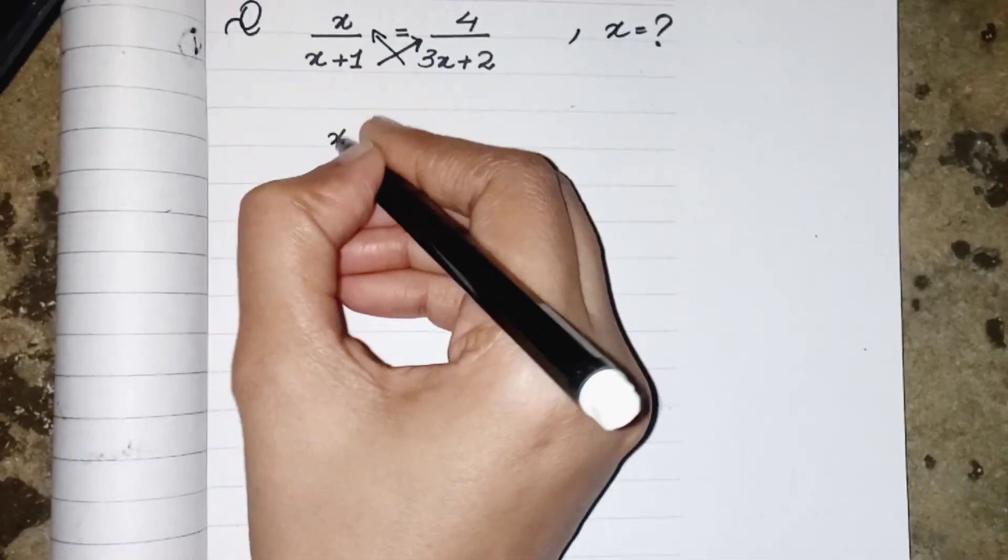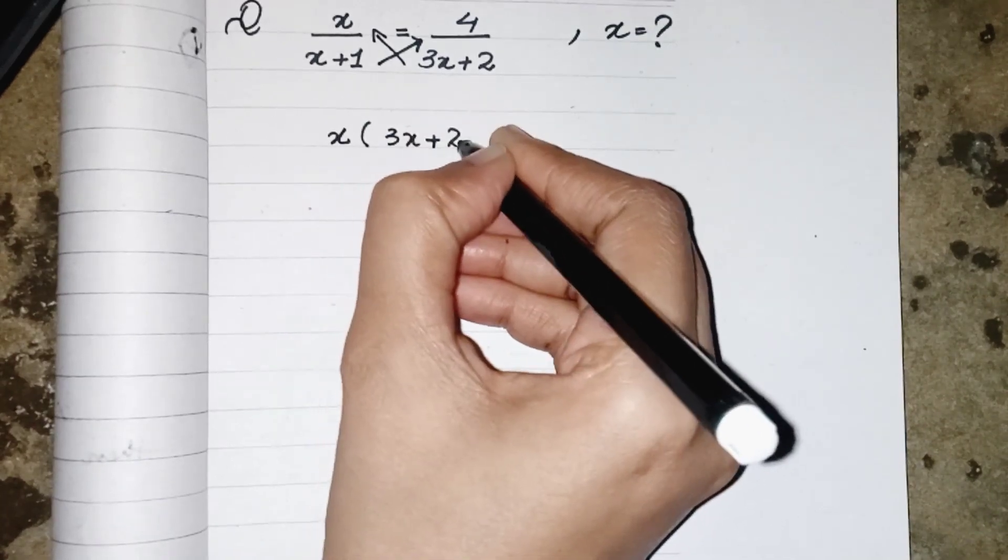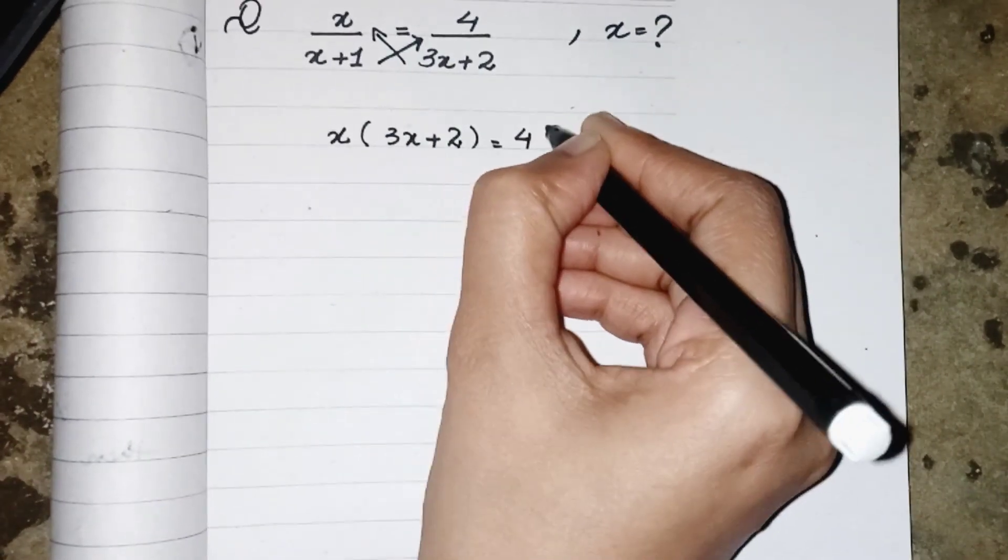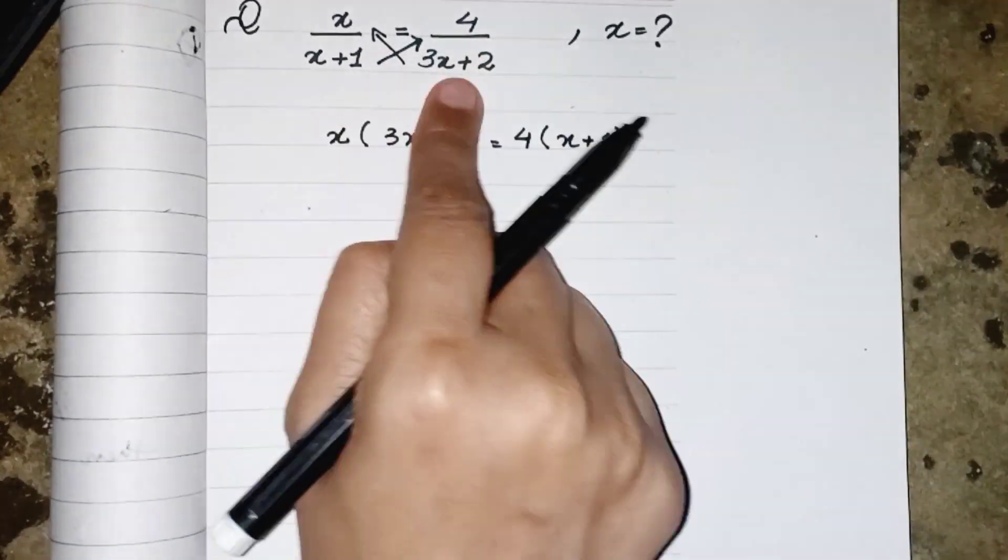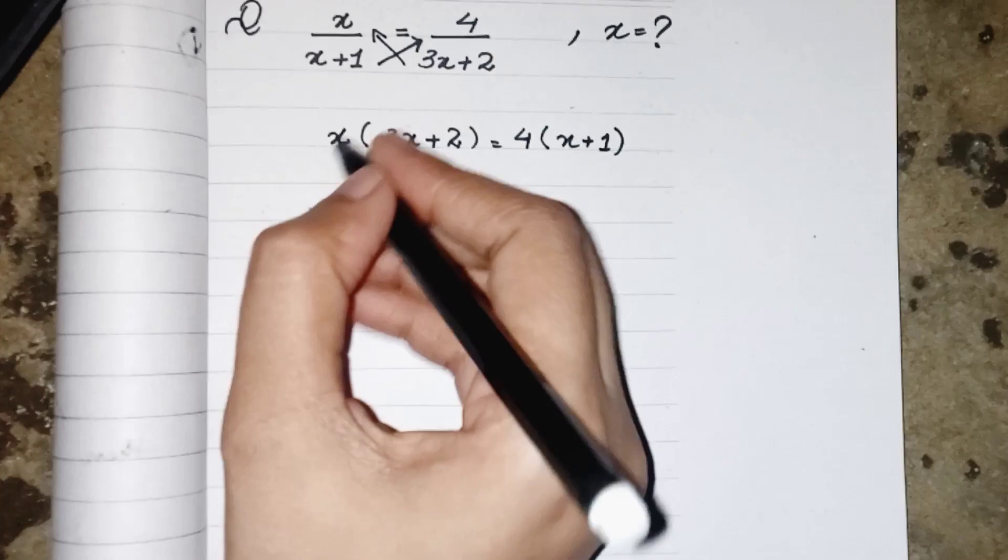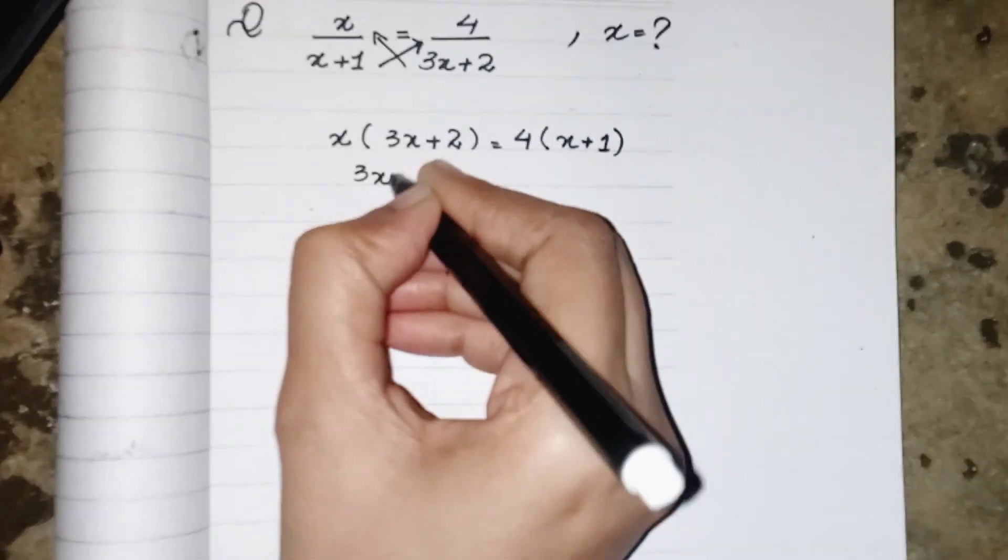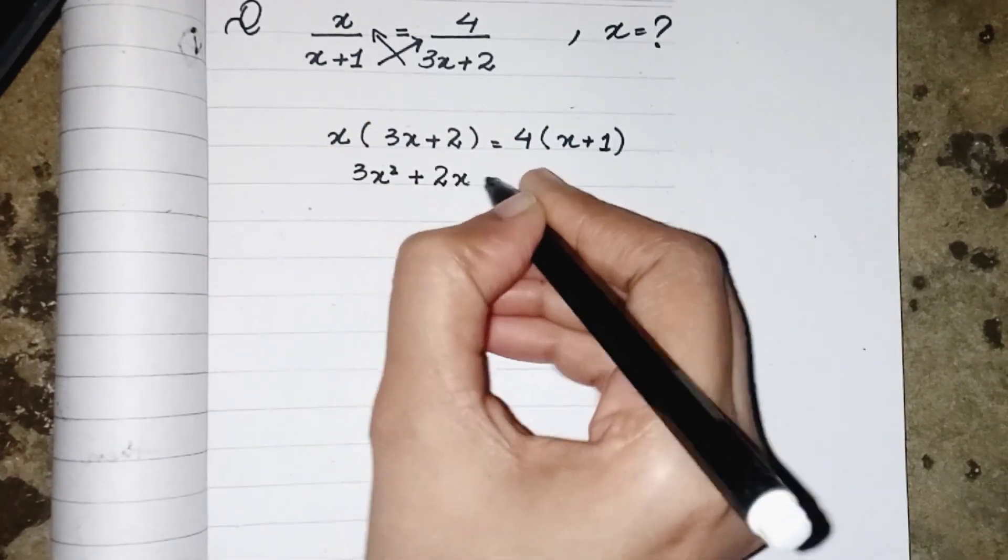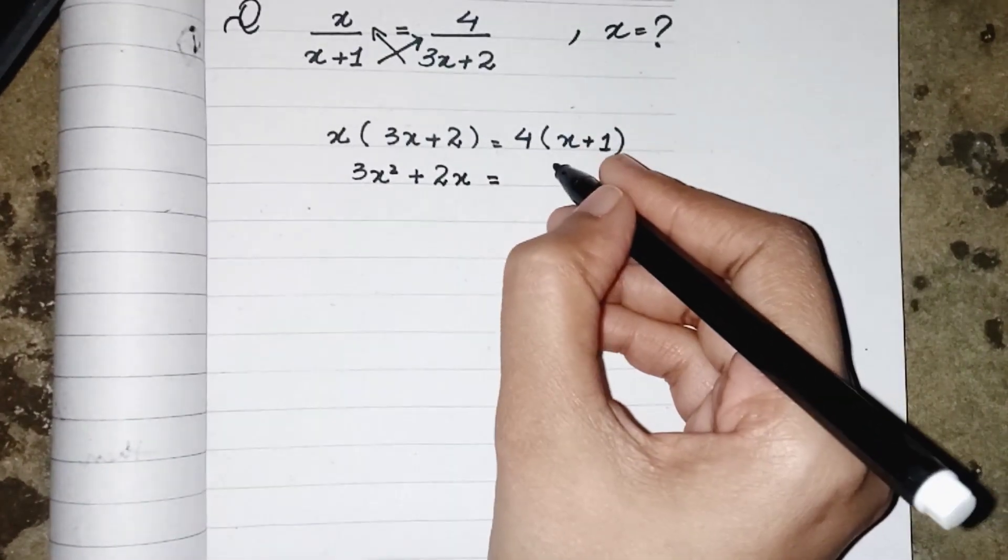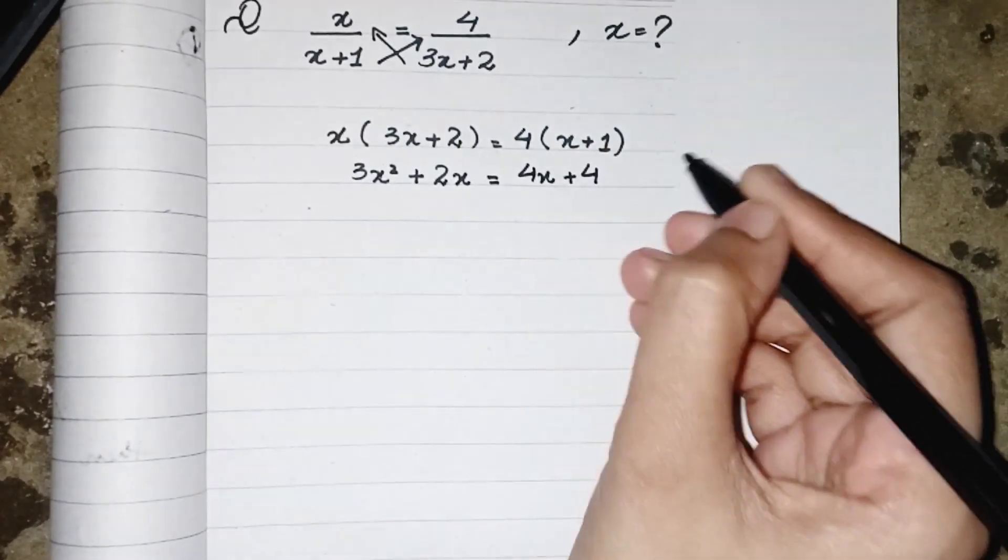We can write that this x will be multiplied by 3x+2 and this 4 multiplied by x+1. x multiplied by 3x will result as 3x². x multiplied by 2 will result as 2x. 4 multiplied by x will result as 4x and 4 multiplied by 1 result as 4.